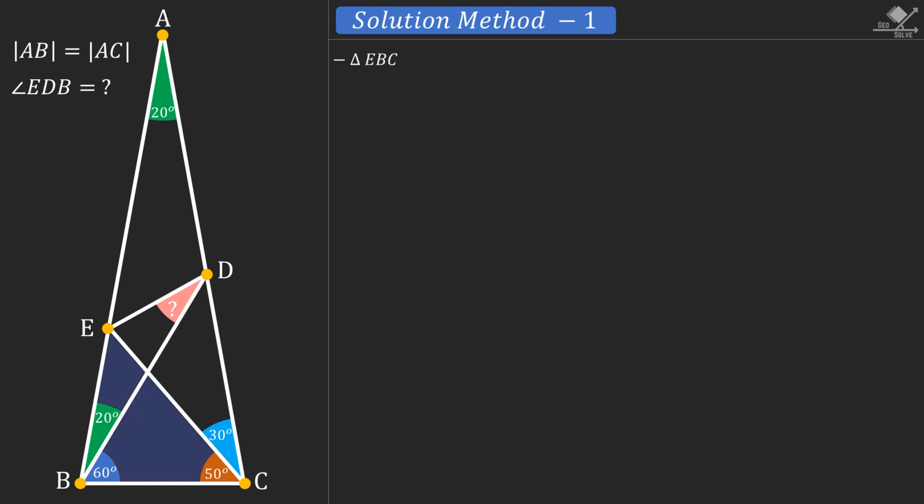First focus on triangle EBC. We can find angle E of this triangle using the sum of internal angles. From this equation, angle E will be 50 degrees. Let's see this angle on the question also. We see that this triangle has equal base angles, so it's an isosceles triangle.